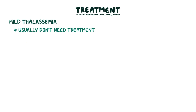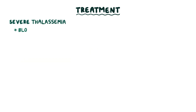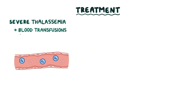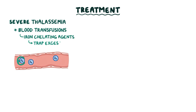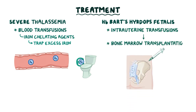Usually, patients with mild thalassemia don't need treatment, while patients with severe thalassemia are treated with blood transfusions. To prevent iron overload, iron chelating agents can be given to trap some excess iron and sweep it away through feces or urine. When diagnosed prenatally, HbH can be treated with intrauterine transfusions, and later followed up with bone marrow transplantation.